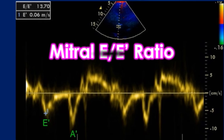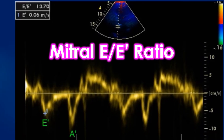Mitral E by E' ratio on echocardiogram is an important indicator of left ventricular diastolic function. It can be used in the presence of atrial fibrillation when E by A ratio is not available. Tissue Doppler echocardiography showing measurement of Mitral E by E' ratio for assessment of diastolic dysfunction.